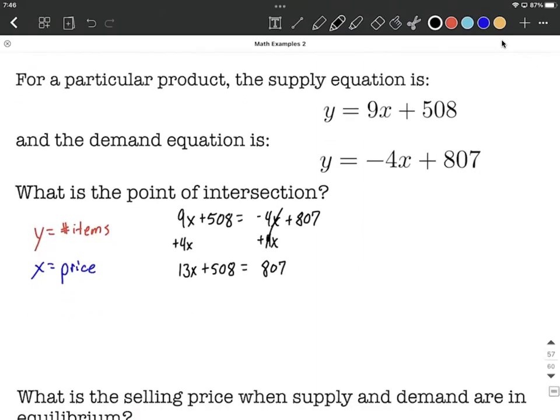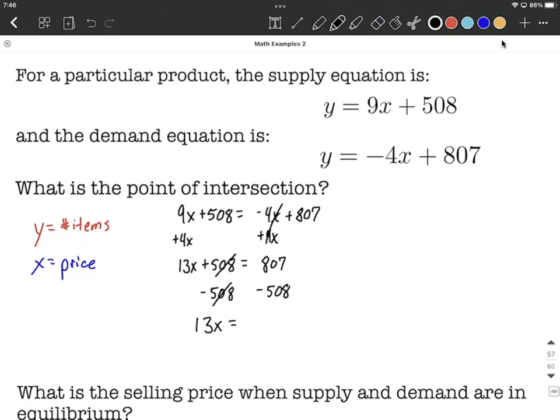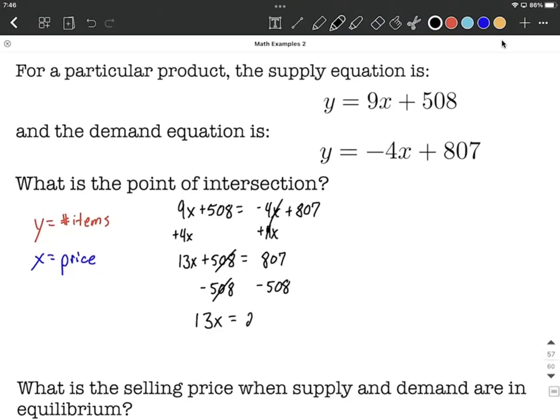Okay, from here, we've got all the variables on one side. Let's get all the constants to the other side. So I'm going to subtract 508 from both sides. Combining like terms, those get to cancel, and we're left with 13x on the left-hand side. On the right-hand side, we're going to have 807 minus 508, which leaves us with 299.